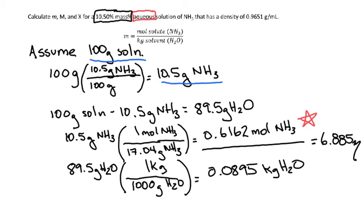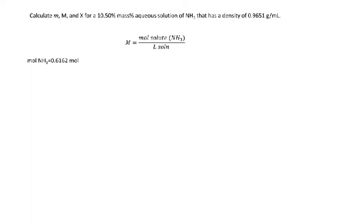That's our molality. Now let's move on and solve for molarity. Molarity is equal to moles of the solute per liter of the solution. We already know the moles of the solute from our molality calculation — 0.6162 moles of ammonia. Now we need to figure out the liters of the solution.